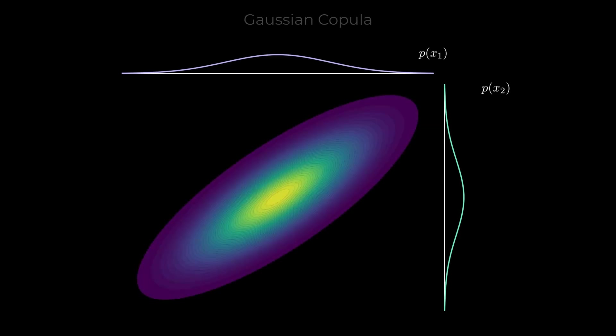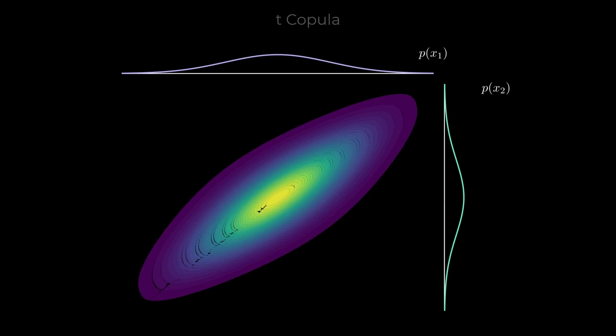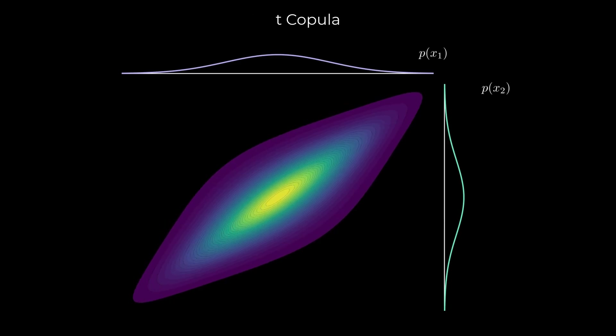In the first plot, we have the Gaussian copula, with balanced dependence throughout. In the second, we switch to the T copula, which introduces stronger tail dependence. The variables are more tightly connected in the extremes than in the center.